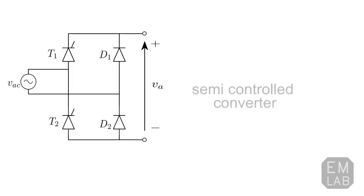If we are replacing two diodes in the bridge rectifier with two SCRs, then we will get a semi-controlled converter. And if all the diodes are replaced with SCR, then it will become a fully controlled converter. In the lab, we are using semi-controlled converter.